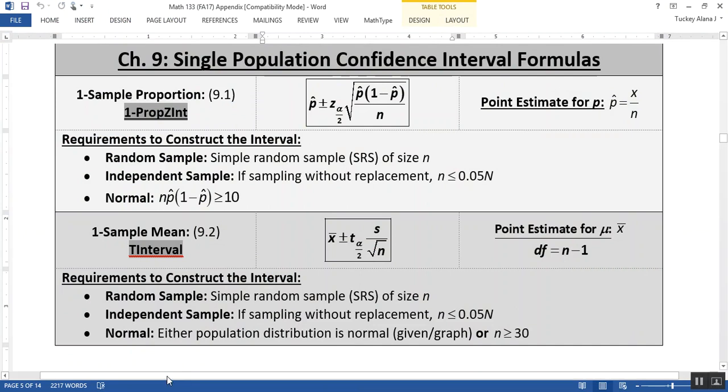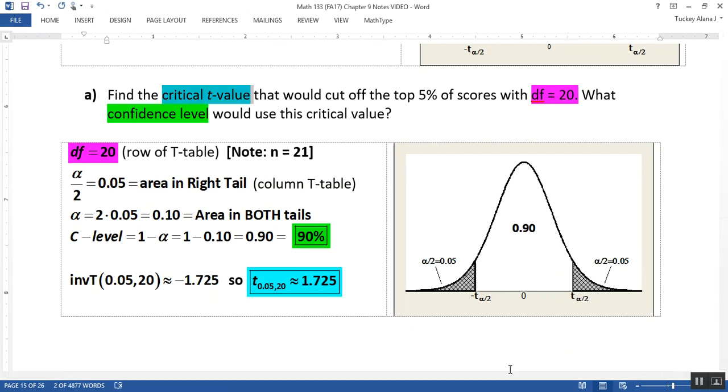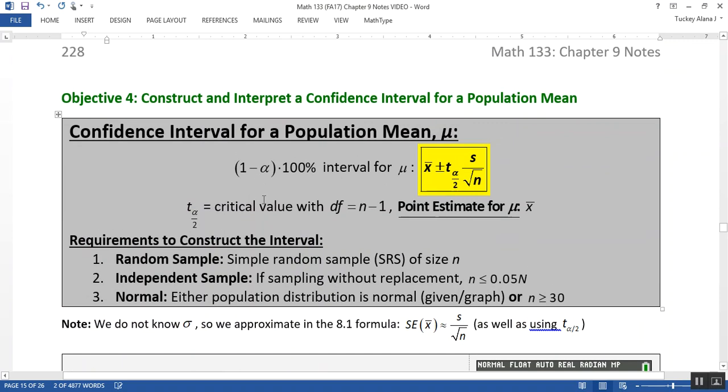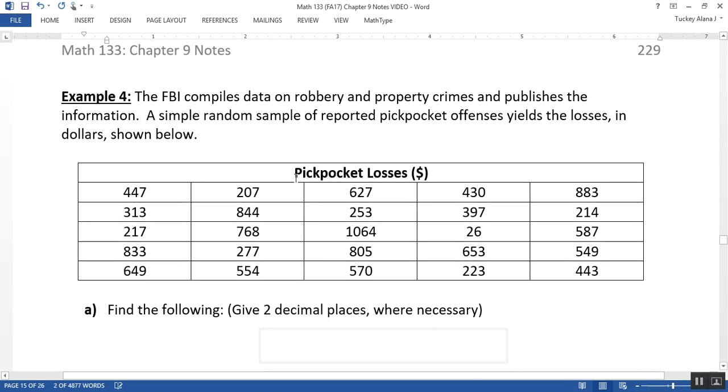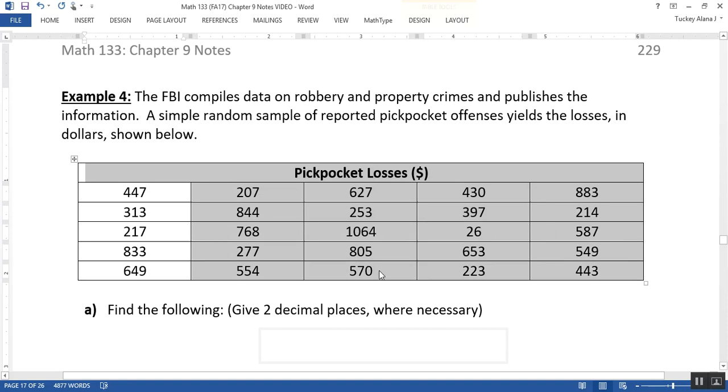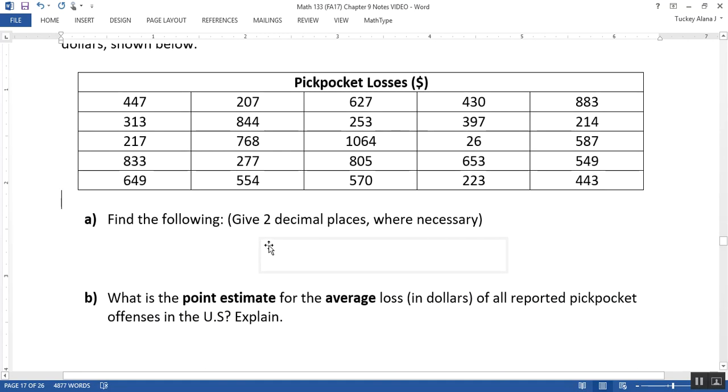Okay, so let's go construct a confidence interval. Why not? I mean, we have the formula for it, so we should be able to do this. And there's the calculator steps, but we'll see how to do it as we do this problem. So the FBI compiles data on robbery and property crimes and publishes the information. A simple random sample of reported pickpocket offenses yields the losses in dollars shown below. So these are all the pickpocketing reported crimes that we have for pickpocket offenses to the FBI. And this is just a sample of them.